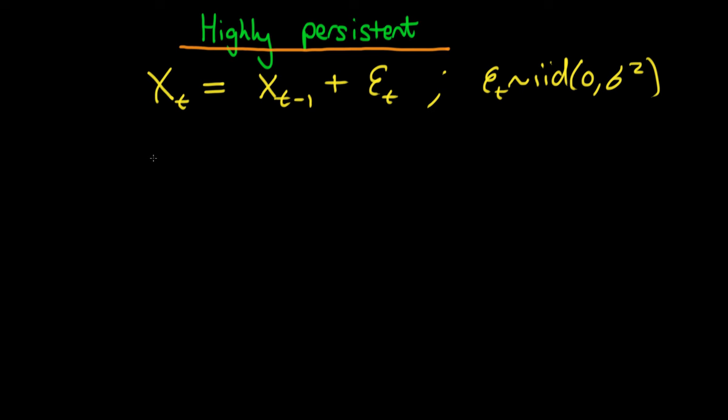Let's say I'm at time t and I want to predict the value of X at some period in the future. So I want to predict the value of Xt plus H, where H is some positive integer. I could back substitute in for Xt plus H and I would find that it was equal to Xt plus epsilon t plus 1 plus epsilon t plus 2 all the way up to epsilon t plus H.